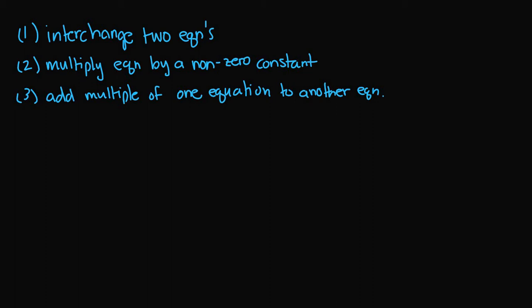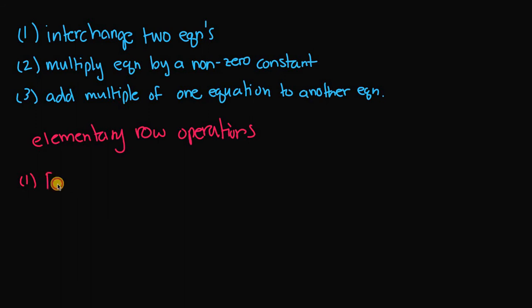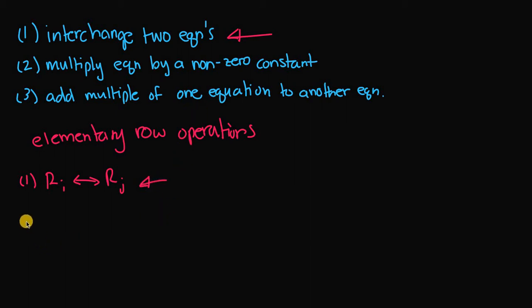Now when we deal with matrices, we call these operations elementary row operations. These are exactly the same rules that were applied to systems of linear equations, just written in a more concise way to apply for matrices. The first rule is that we can take one row of the matrix and interchange it with another row — exactly like rule one for systems of linear equations.